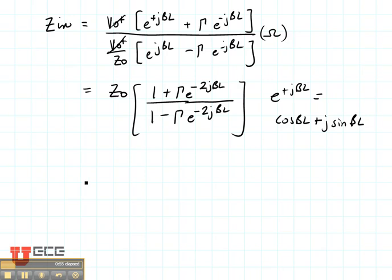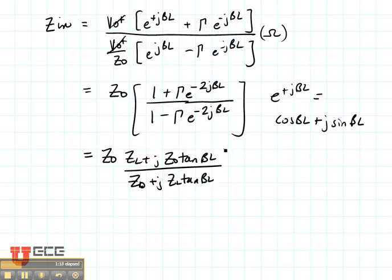If we combine this and do some algebra, your book has done this for you, you'll come up with another term that looks like this. It's going to be Z zero times ZL plus J Z naught tangent of beta L over Z naught plus J ZL tangent of beta L.